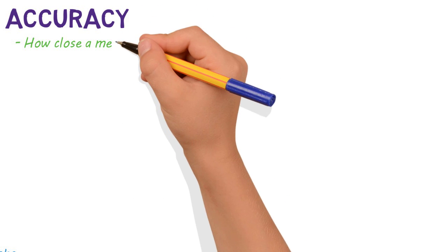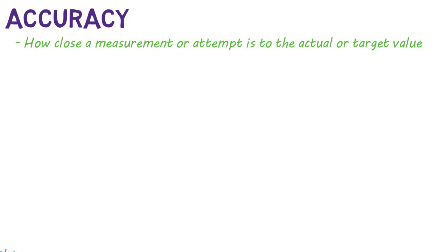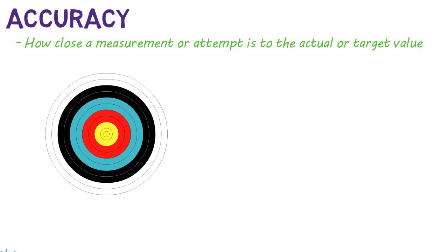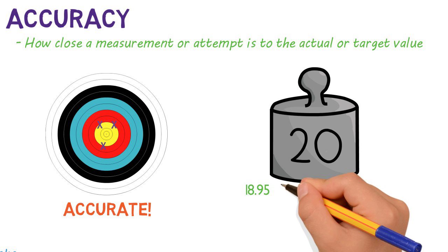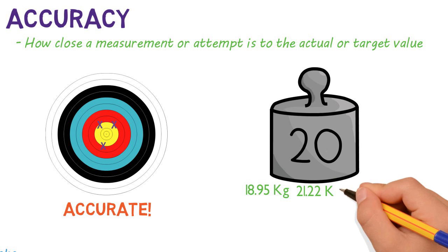Accuracy refers to how close something is to the target or actual. Using a target to illustrate, consistently hitting near the center would be accurate. Using another example, if we were to use a scale to weigh a 20kg dumbbell three times, and the scale read 18.95kg, 21.22kg, and 19.81kg for each respective weighing, we would say that scale is accurate.